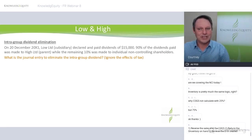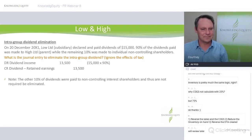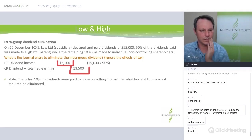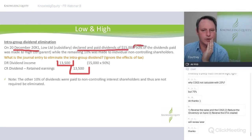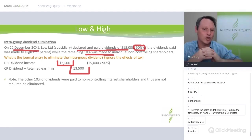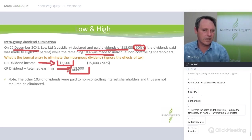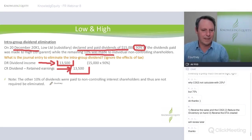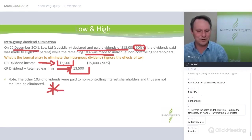Intra-group dividend elimination — hopefully you get these in the exam because they're much easier. 20th of December 20X1: 90% of the dividend was paid to High Limited. So we only eliminate the 90% internal transfer — debit dividend income, credit dividend retained earnings at 90%. The 10% external portion is not adjusted. That's the little red herring to watch for.